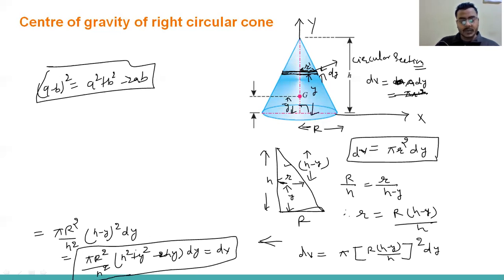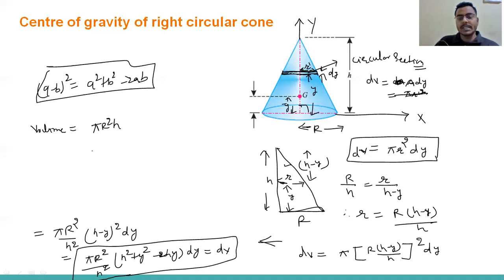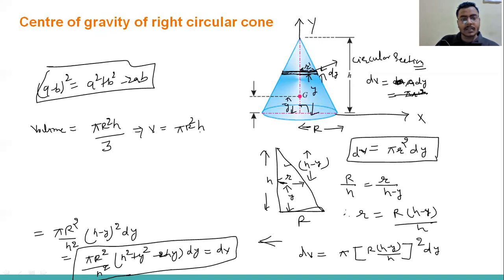The volume of a right circular cone is one-third of the cylindrical shape with the same base radius and height, so V equals pi R² h divided by 3. Now we have both V and dV, so we can proceed to the calculation.